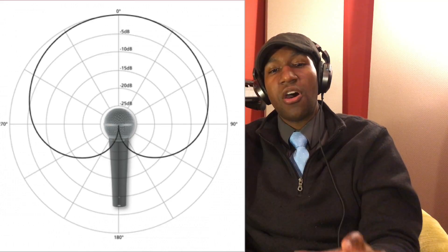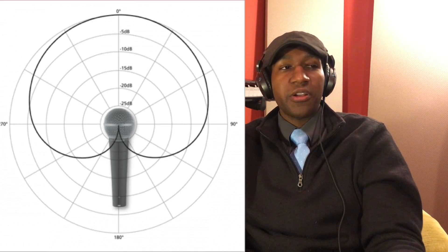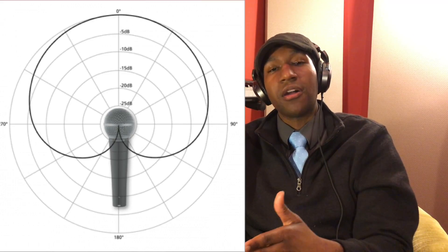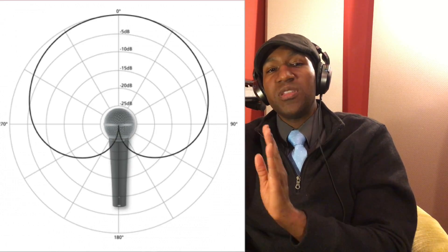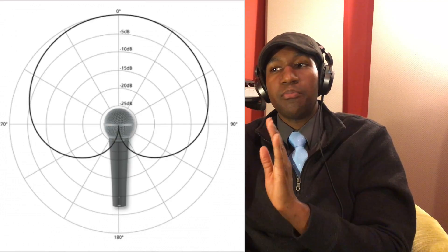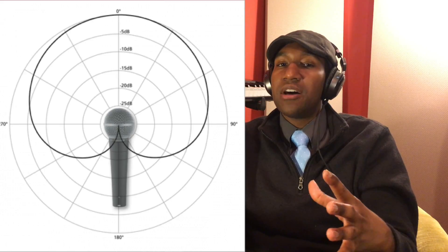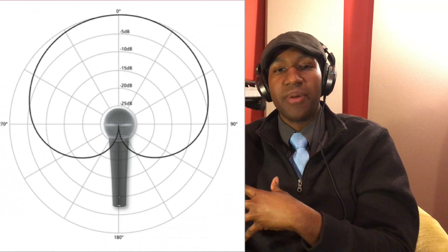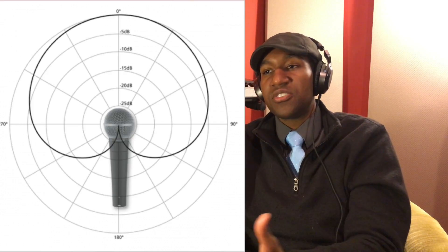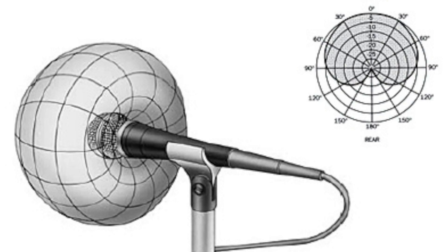The next graph you see here is a cardioid pickup pattern. The reason it's called cardioid is because of the shape — it looks like a heart. So it has some characteristics of an omnidirectional microphone, but it emphasizes the sound it picks up based on where the microphone is pointed. It picks up less sound from the sides and is designed to reject sound mostly from behind the microphone — as you can see from this graph. And here's a picture of that in 3D.